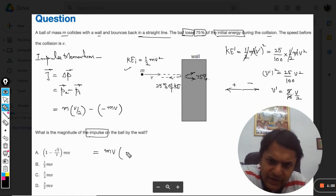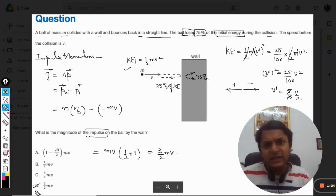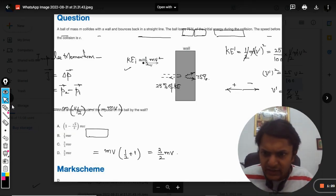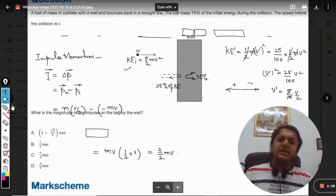We take m v as common, so it will become half plus 1, yes it will be 3 by 2 m into v. So our answer will be D. Let us verify this once. Yes, the mark scheme says that the answer is D.